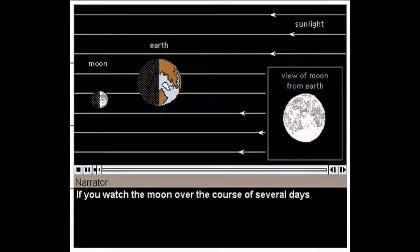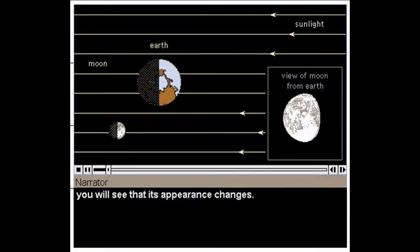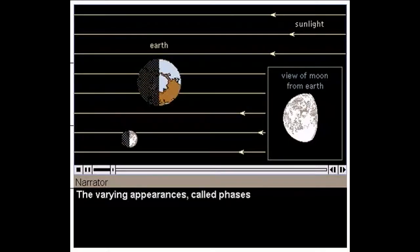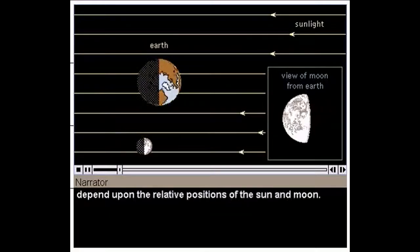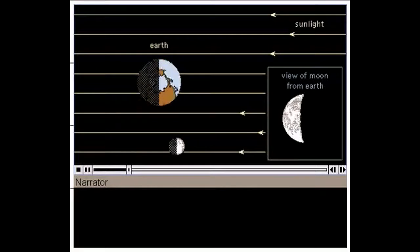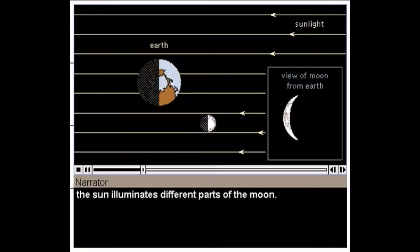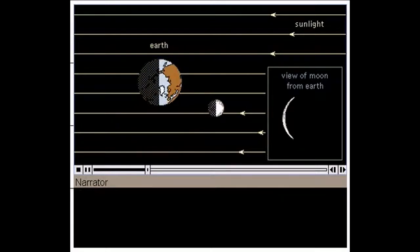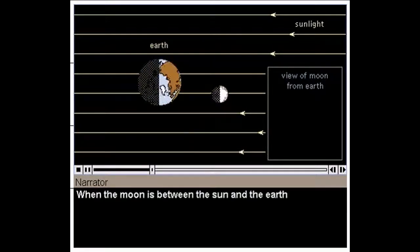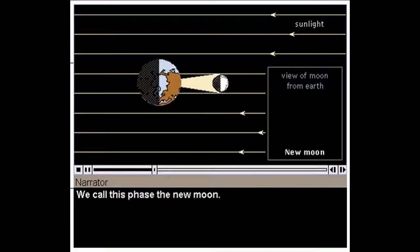If you watch the moon over the course of several days, you will see that its appearance changes. The varying appearances, called phases, depend upon the relative positions of the sun and moon. At different times of the month, the sun illuminates different parts of the moon. When the moon is between the sun and the earth, we cannot see any of the illuminated side of the moon. The moon is dark. We call this phase the new moon. The amount of lighted surface visible from the earth begins to grow. We see a waxing crescent.